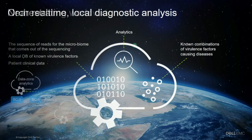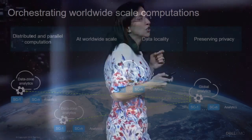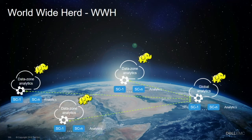We extended the Hadoop framework to orchestrate distributed parallel computation across clusters scattered worldwide, pushing computation as close as possible to the data source, and then combining those results to do worldwide-scale analytics. If a single Hadoop instance is represented by one elephant, a set of Hadoop instances scattered across the world walking in tandem actually creates a worldwide herd — and that's what we named our Hadoop extensions.